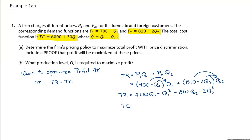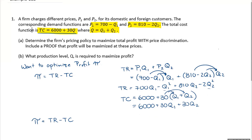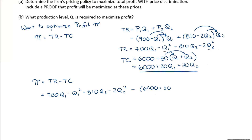For total cost, I was given TC = 6,000 + 30Q. I need it in terms of Q1 and Q2, so I substitute Q = Q1 + Q2, giving 6,000 + 30Q1 + 30Q2. Now putting it all together, profit = total revenue − total cost: (700Q1 − Q1² + 810Q2 − 2Q2²) − (6,000 + 30Q1 + 30Q2).